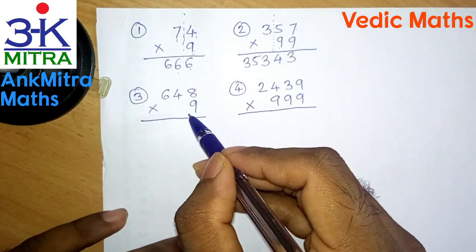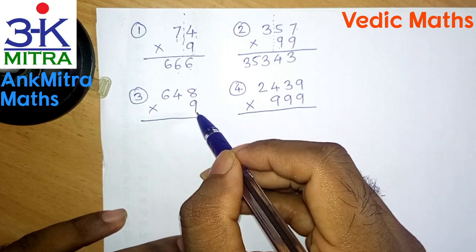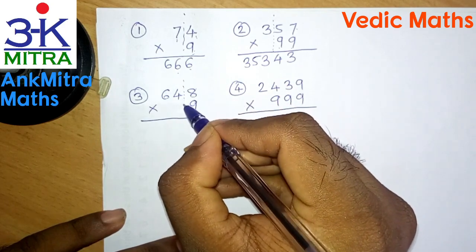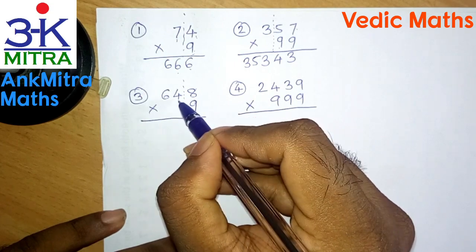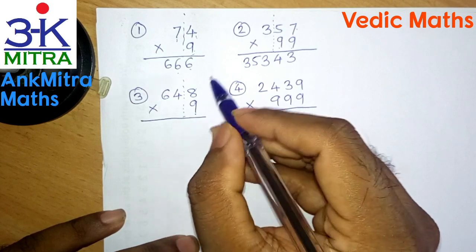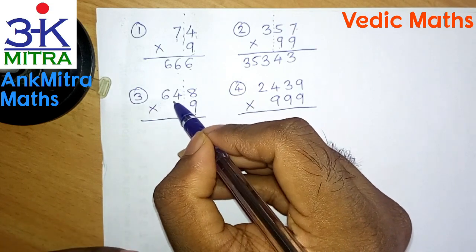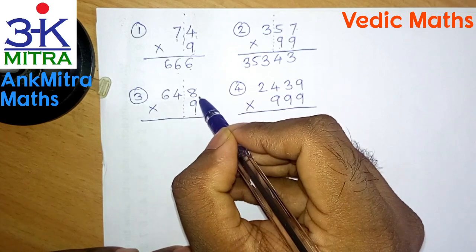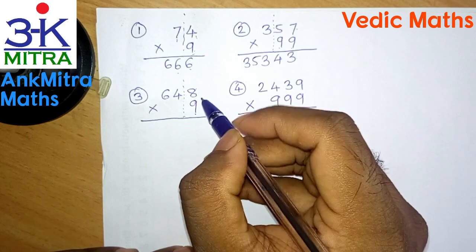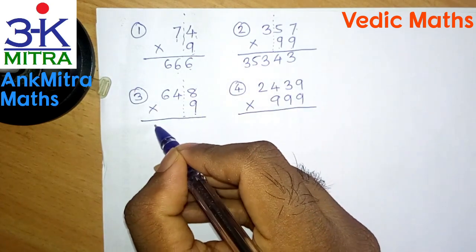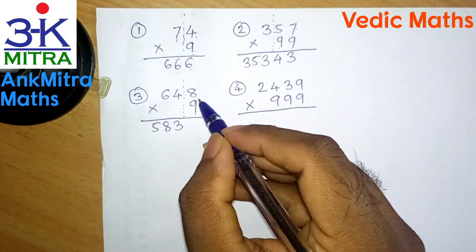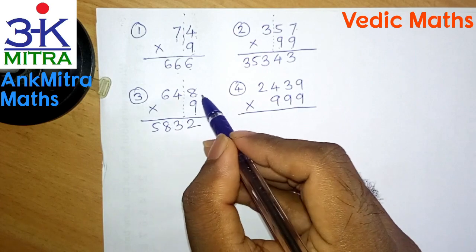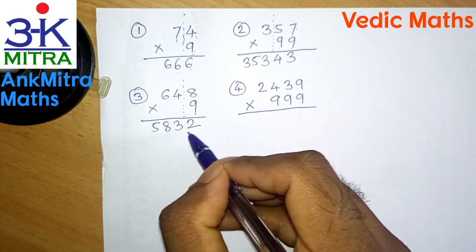Now let's look at the third example — a three-digit number multiplied by a single 9. Single-digit multiplier, so we draw a partition line next to that single digit. We now have a two-digit number on the left of the multiplicand. We increase that two-digit number by 1: 64 becomes 65. Then we subtract 65 from the entire multiplicand: 648 minus 65 gives us 583, which we write on the left. For the final step we subtract 8 from the base of 9, that is 10 — 10 minus 8 gives us 2. So the answer for 648 multiplied by 9 is 5,832.